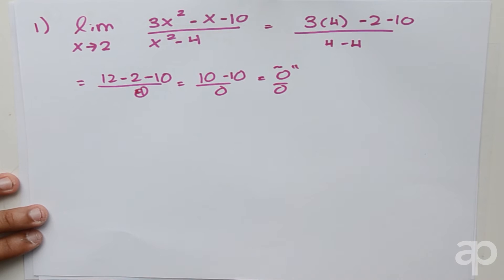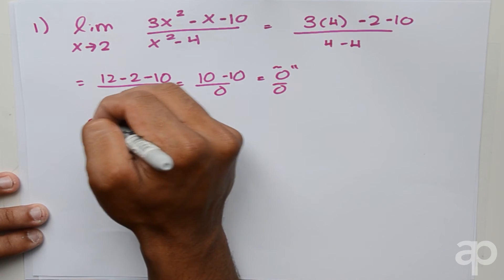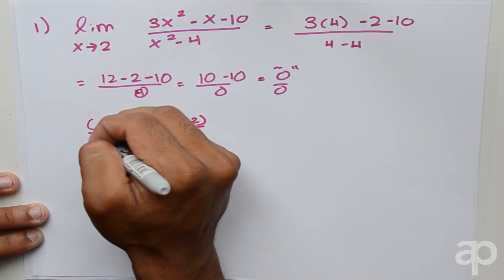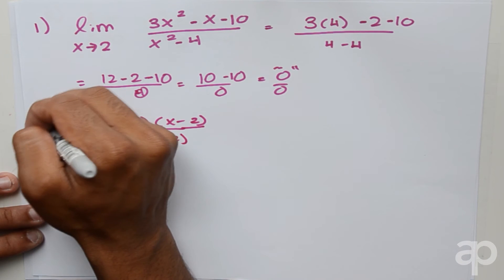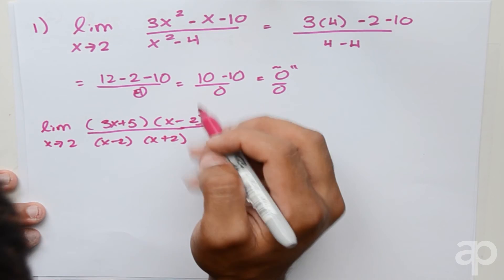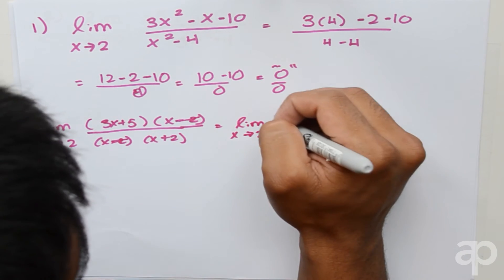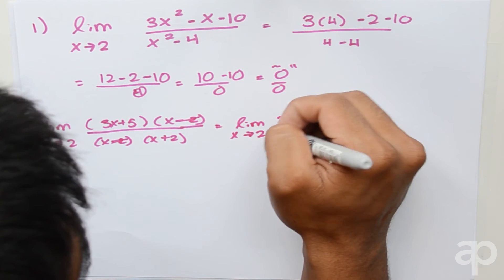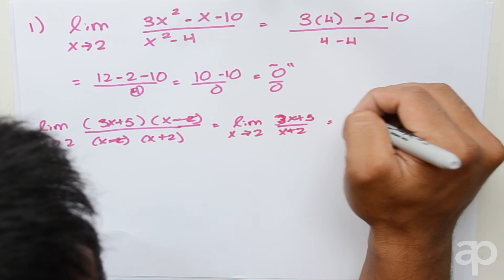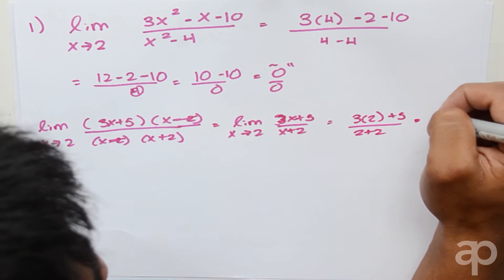We should notice that both the numerator and denominator can be factored. The numerator factors into (3x + 5)(x − 2) and the denominator factors into (x − 2)(x + 2). The (x − 2) terms cancel, leaving us with the limit of (3x + 5) over (x + 2) as x approaches 2. Substituting 2 gives us 3 times 2 plus 5 over 2 plus 2, which simplifies to 11 over 4.